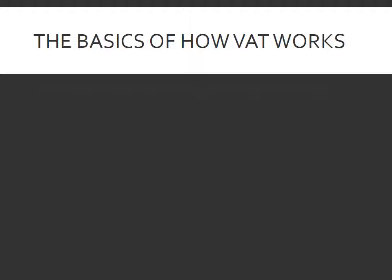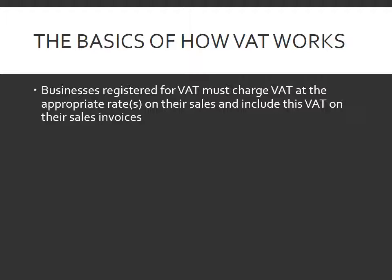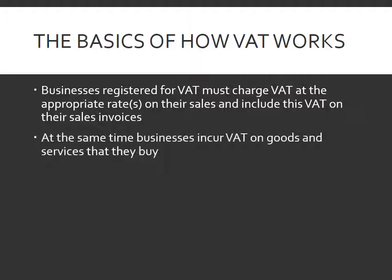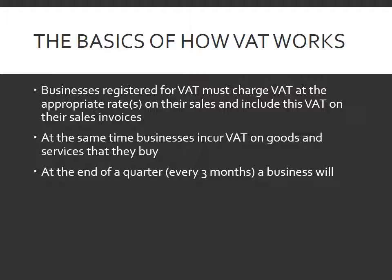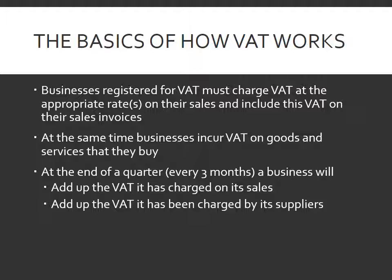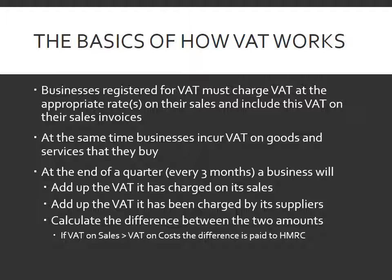So how does VAT work? Businesses that are registered for VAT — and that involves businesses with vatable turnover of more than £83,000 a year at the moment, and each year it does go up a little bit — they have to charge VAT at the appropriate rate on their sales, and they include the VAT on their sales invoices. At the same time, businesses are incurring VAT on the goods and services that they buy from their suppliers. At the end of a quarter, so that's every three months, a business will add up all of the VAT it's charged on its sales and all of the VAT it's been charged by its suppliers, and calculate the difference between those two amounts.